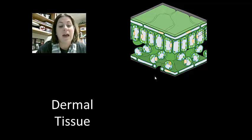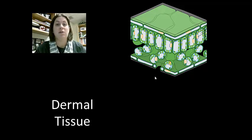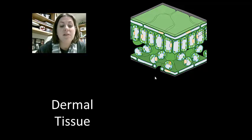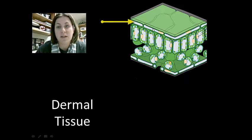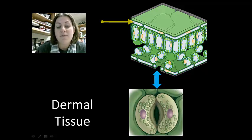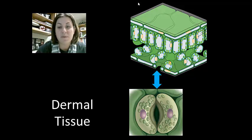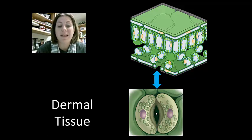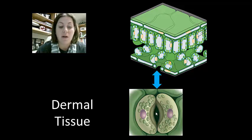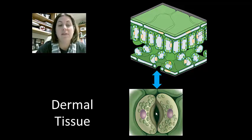The dermal tissue, also known as epidermal tissue, covers the entire body of the plant. Some of its cells are modified — an example is guard cells. In leaves, there are small openings on the underside called stomata, which allow gas exchange: carbon dioxide into the plant for photosynthesis and oxygen out. When stomata are open, the plant can also lose water through a process called transpiration.